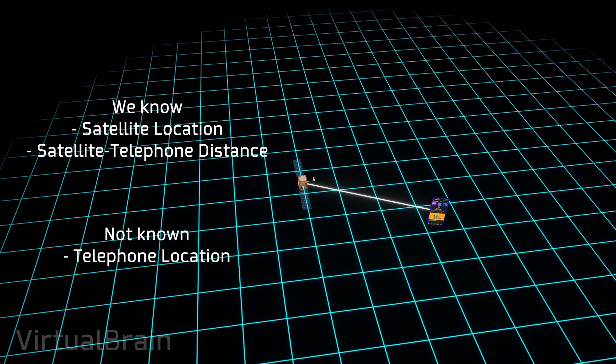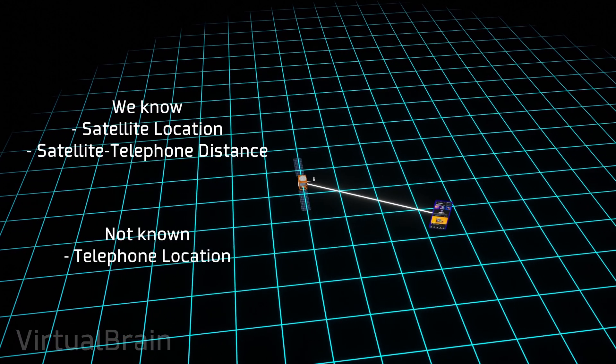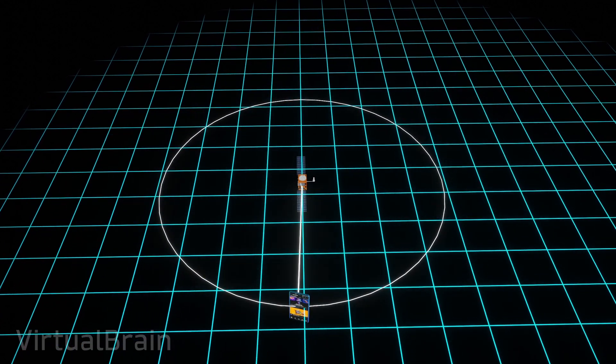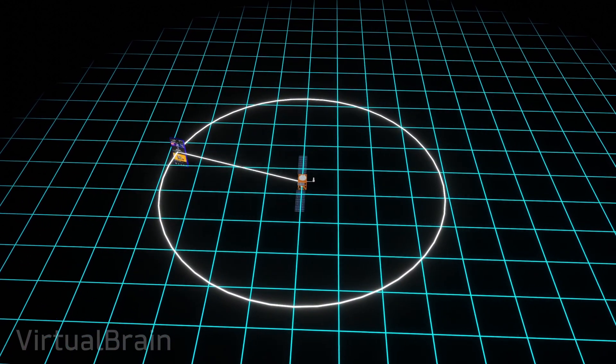Using a single satellite, there will be infinite possible locations where the phone could be, and it must be somewhere on this circumference.